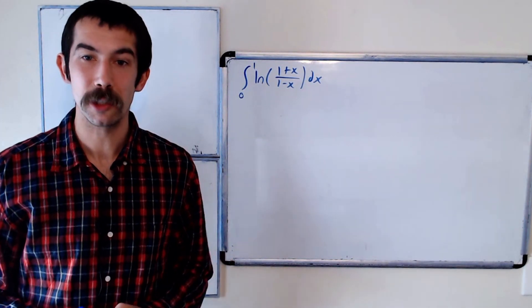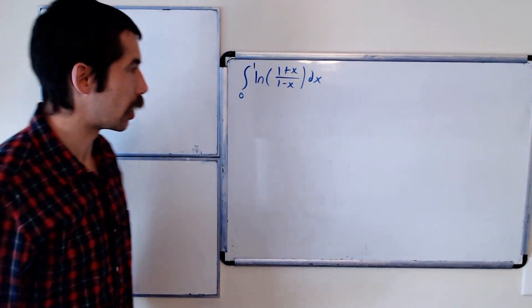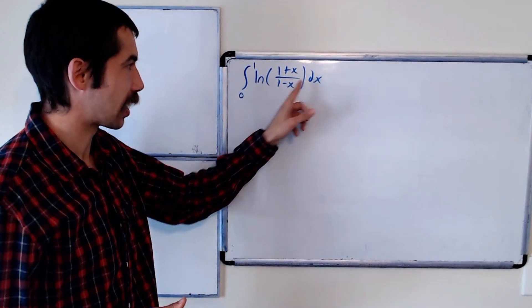Today we're going to do question 4 from the 2020 MIT integration B. The integral from 0 to 1 of ln of 1 plus x over 1 minus x dx.